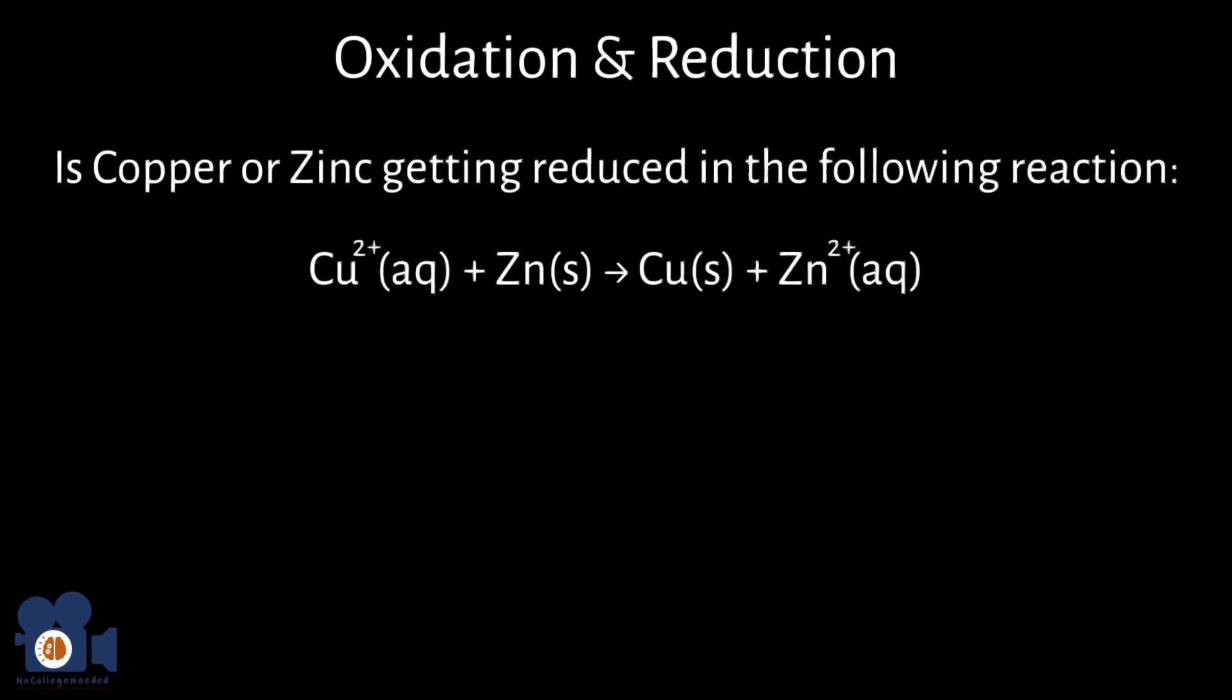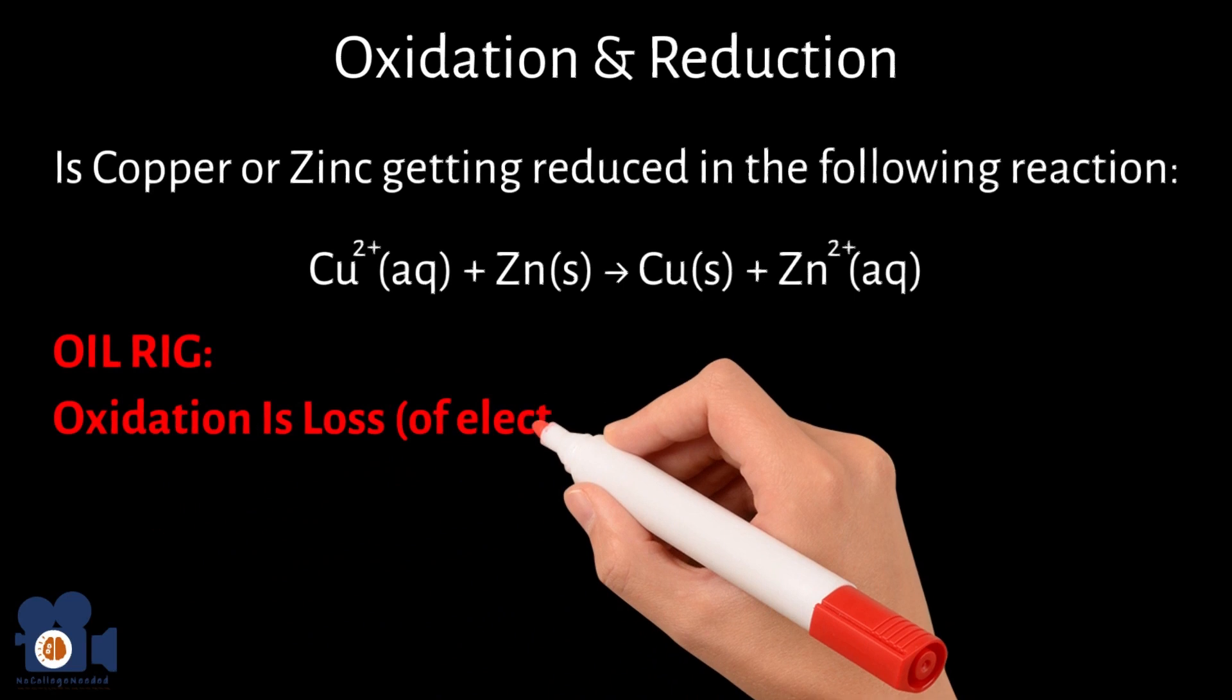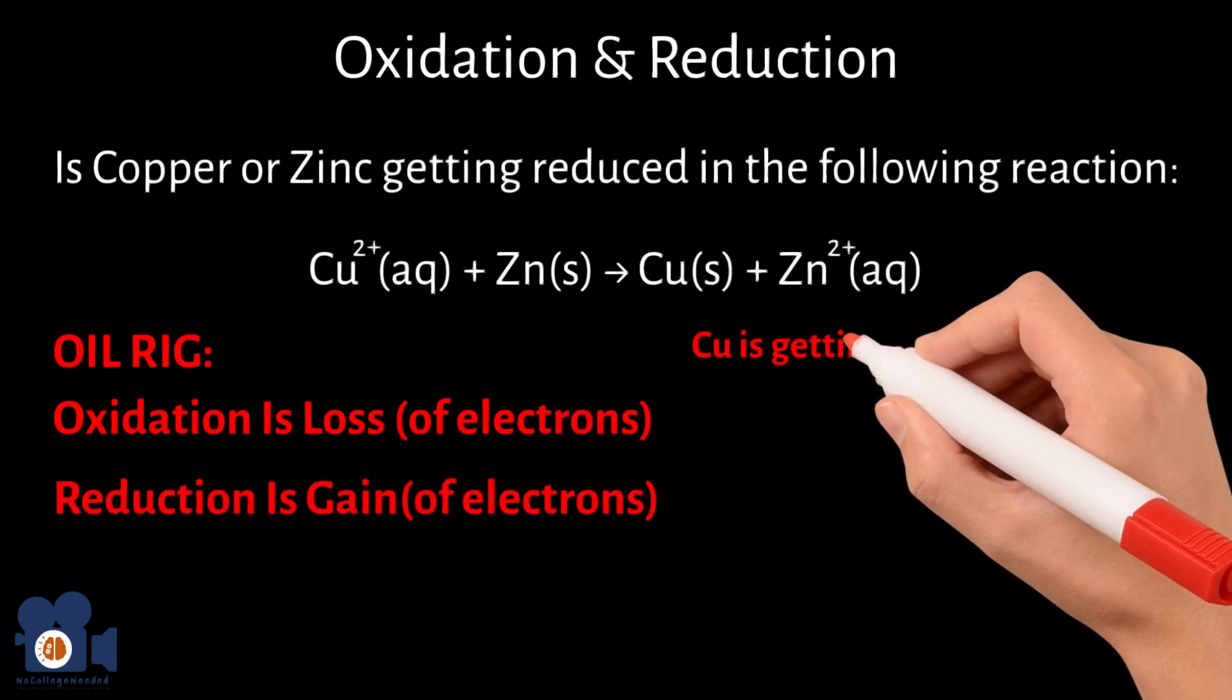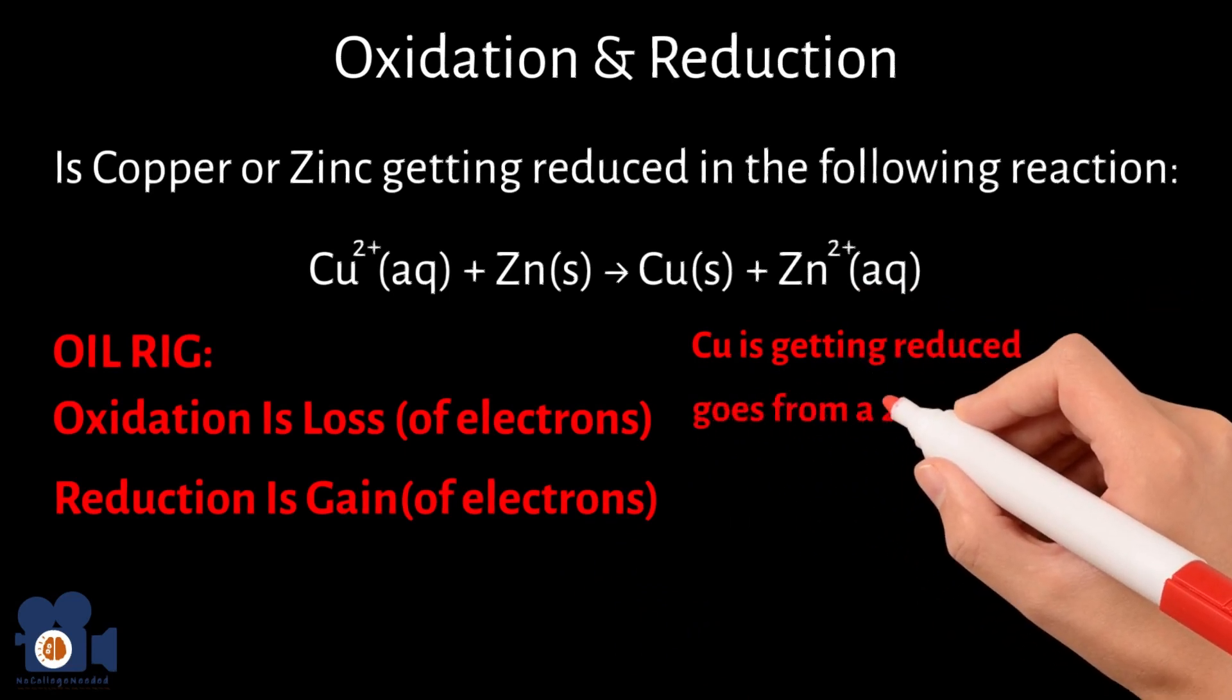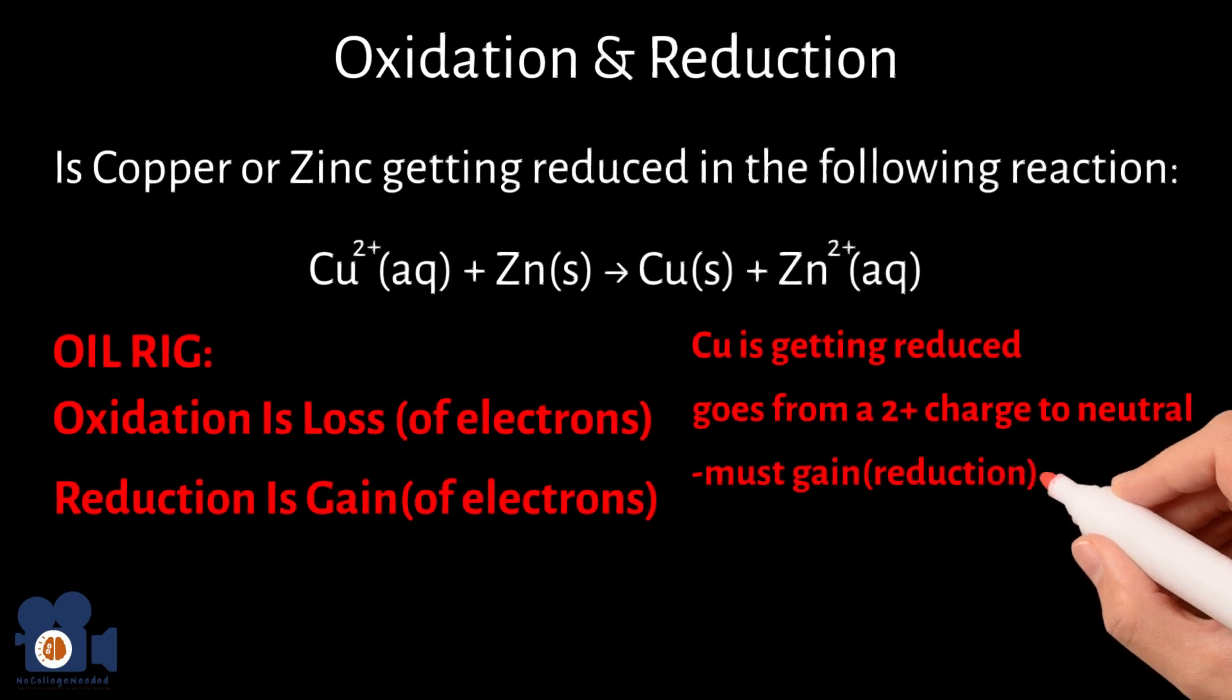For Unit 4.4, remember the acronym OILRIG with oxidation and reduction. With this acronym, oxidation is loss of electrons and reduction is gain of electrons. Therefore, copper is getting reduced because it goes from a 2+ charge to neutral, and to do that, it must gain, hence reduction, electrons.